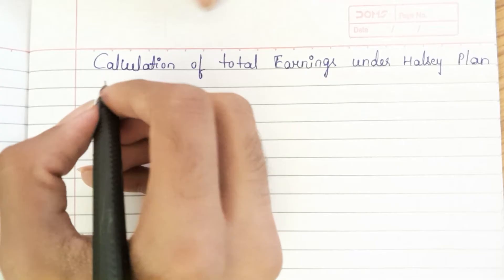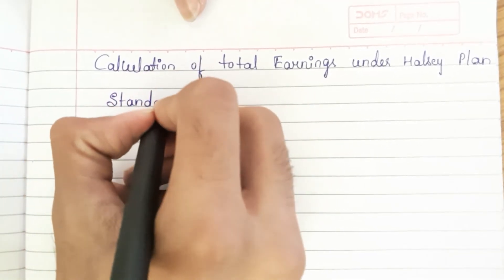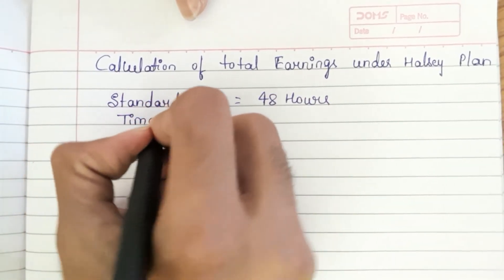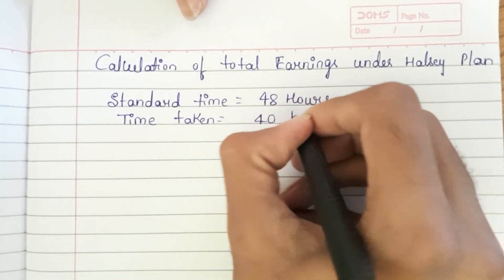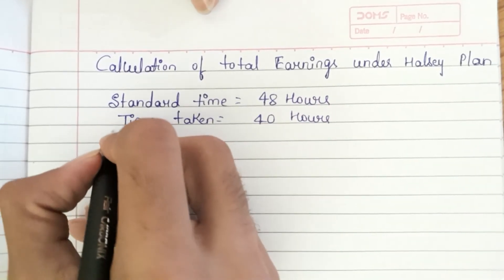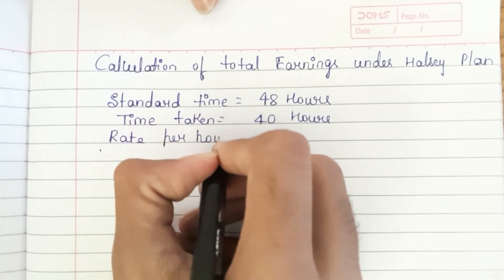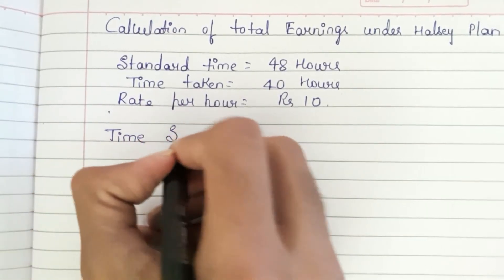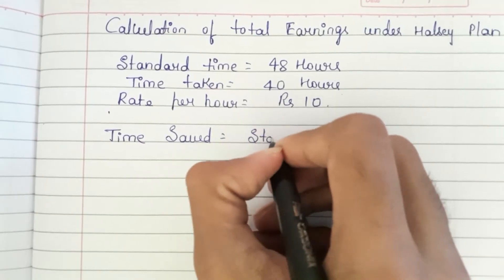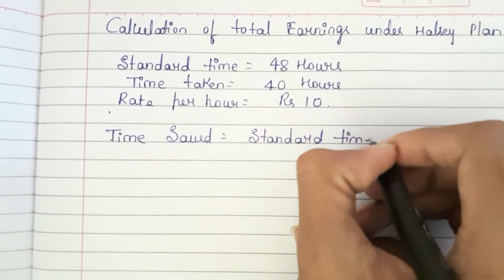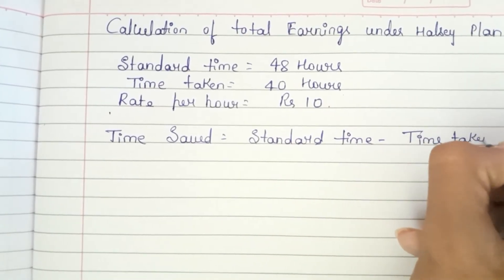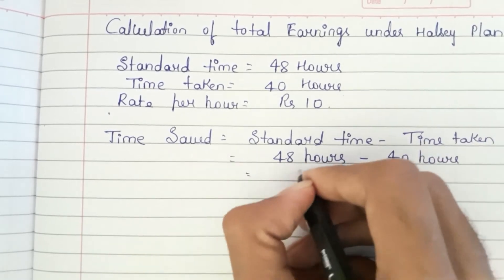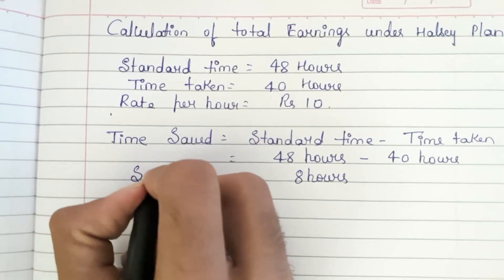Time allowed is the standard time, which is 48 hours. Time taken is 40 hours, and rate per hour is 10 rupees. Since we have standard time and time taken, we can find the time saved. The formula for time saved is: standard time minus time taken, which is 48 minus 40, giving us 8 hours saved.